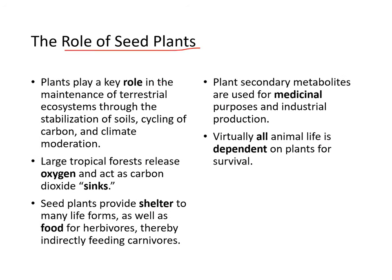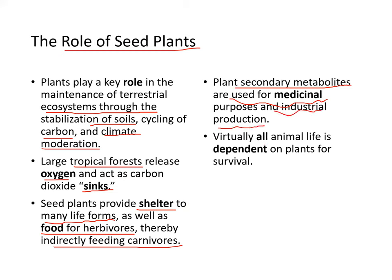Seed plants play a key role in maintenance of the terrestrial ecosystem through stabilizing soil, cycling carbon, and climate moderation. Large tropical forests also release oxygen and act as a carbon dioxide sink. Seed plants provide shelter to many life forms as well as food for herbivores, and thereby also indirectly feed carnivores. Plants' secondary metabolites are often used for medicinal purposes or industrial production. Virtually all animal life is dependent on plants for survival.